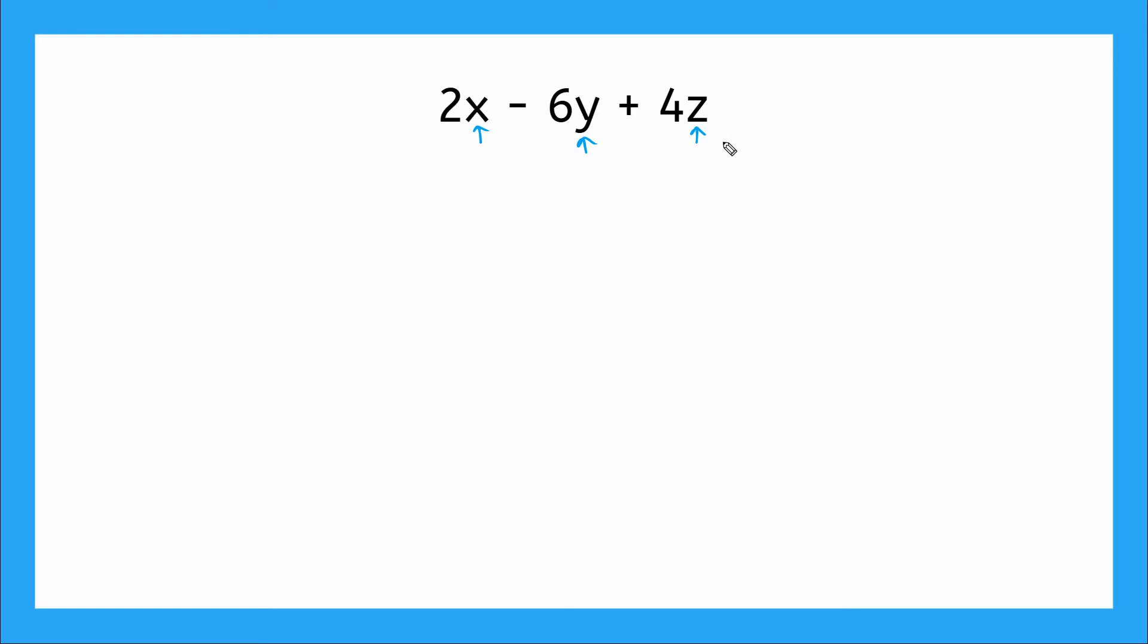Well, let's see by breaking up our three terms into its factors. Our first one will give us 2 × x, that would be 2 and x. And our next term, that would give us 6 and y.